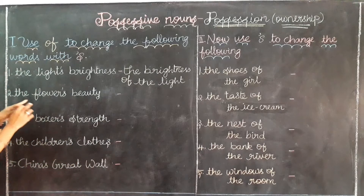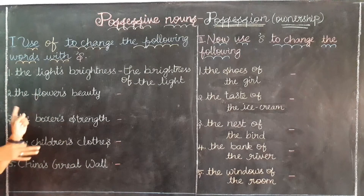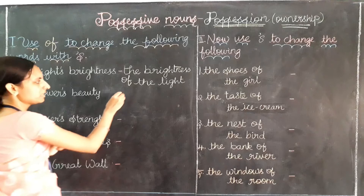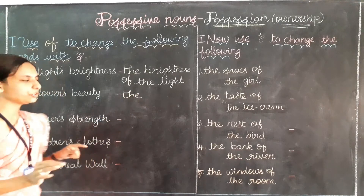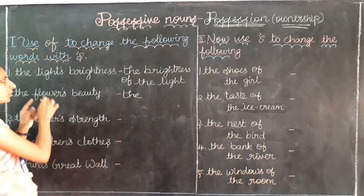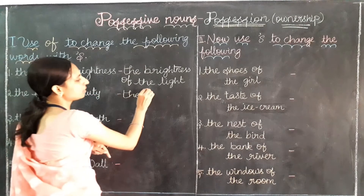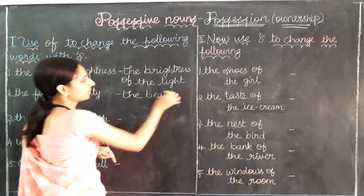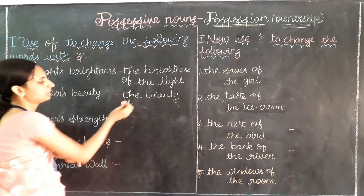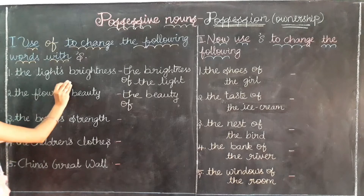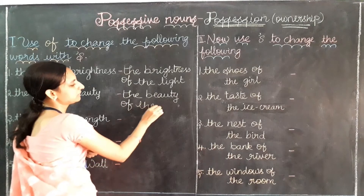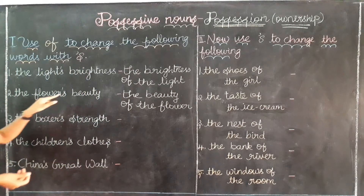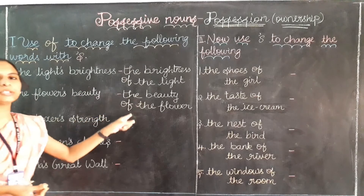Next: 'the flower's beauty.' We are talking about the beauty of the flower. We write 'the beauty' first, then 'of,' then 'the flower' — removing the apostrophe-S. So 'the flower's beauty' becomes 'the beauty of the flower.'